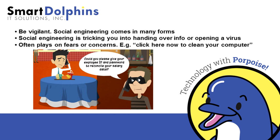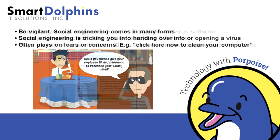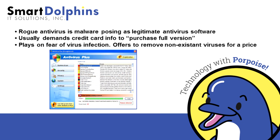Some examples of social engineering are rogue antivirus, which is fake antivirus designed to trick us into handing over credit card information to activate the software — which is really just a virus in disguise.